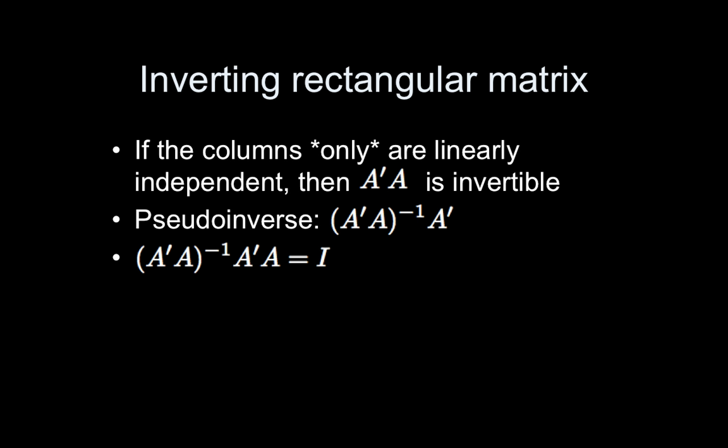If that's the case, then if you take A transpose A, that'll be invertible. So think about the dimensions here for a second. Let's say our matrix A is 100 by 4, then the transpose will be 4 by 100.